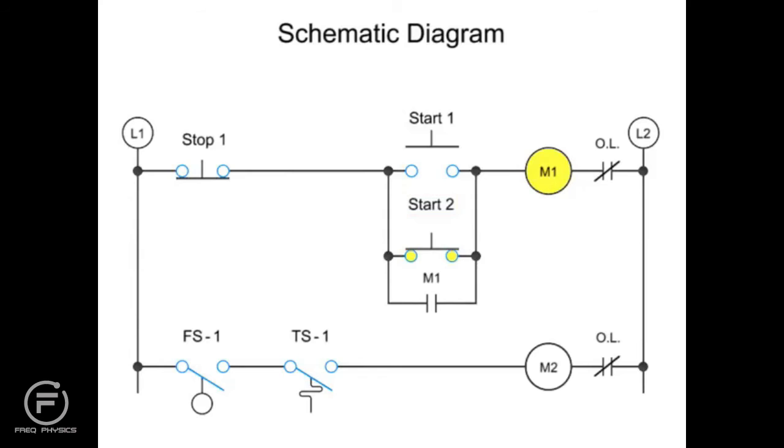With M1 energized, another type of control logic is exhibited, called memory logic. The energized M1 coil will cause the auxiliary contact M1 to automatically close. Therefore, even after the start button contacts are opened, the starter coil will continue to be energized due to the closed position of M1.